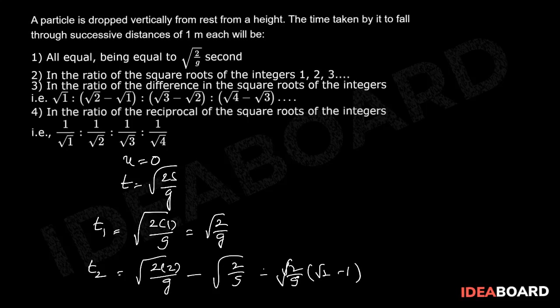Next 1 meter, the time taken t3 equals square root of 2 into 3 by g minus square root of 2 into 2 by g. Root 2 by g common, we get root 3 minus root 2, and so on.